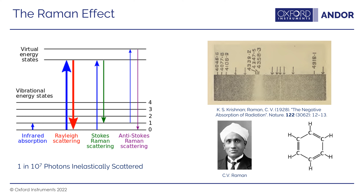But the mechanism is very different. Looking at this energy level diagram, on the far left in infrared absorption spectroscopy, you have light having the frequency equal to that of a vibrational transition in a sample, and the sample directly absorbs the light and is excited from a ground state to an excited vibrational state. In Raman spectroscopy, the energy of the light is much, much greater than that of any vibrational transition frequency in the sample.